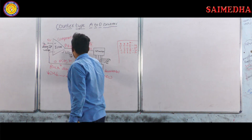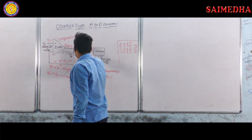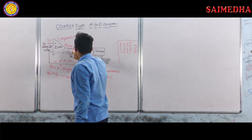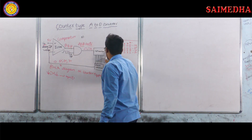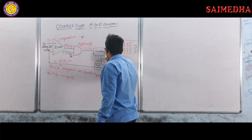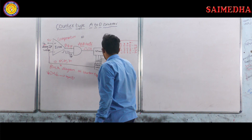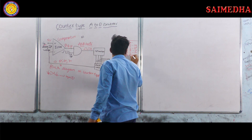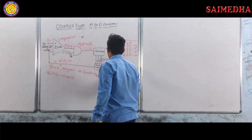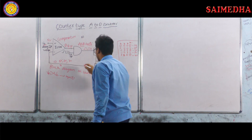The AND gate again multiplies the clock input with one and gives it to the up counter. The up counter output is given to the D to A converter, and the up counter value is incremented to 0100, producing four volts.